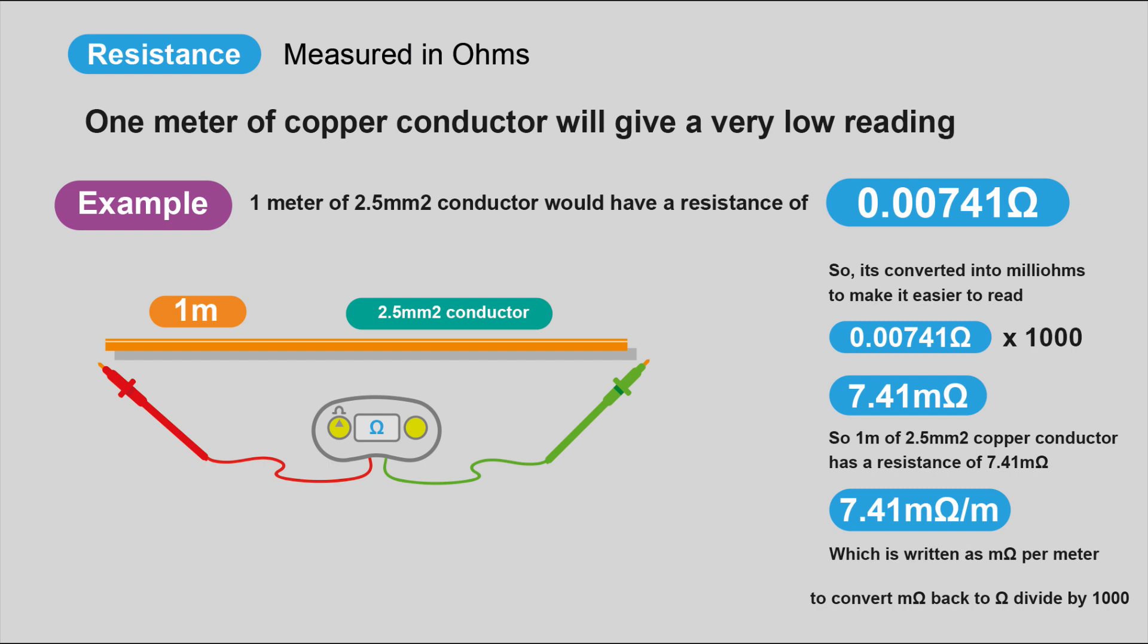We're only going to deal with copper conductors here. It's such a good conductor that the values we're talking about, the numbers we're talking about, are very, very low. In this example here, we've got one meter of 2.5 millimeters squared conductor, and that would have a resistance of 0.00741 ohms.